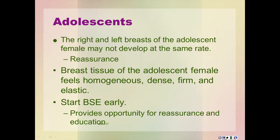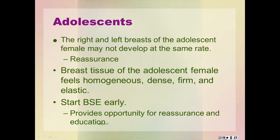The right and left breasts of the adolescent female may not develop at the same rate. Reassure the girl that this asymmetry is common and that her breasts are developing appropriately. Breast tissue of the adolescent female feels homogenous, dense, firm, and elastic. Although malignancy in this age group is rare, routine examination provides a great opportunity for reassurance and to educate her on breast self-examination, establishing a very healthy habit for life.